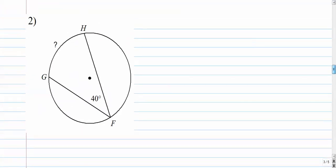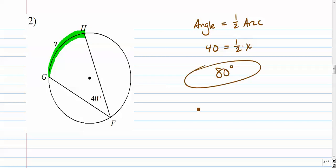Number two. Sometimes you'll be given the angle and asked to find the arc. So we're looking for this arc right here. Again, the inscribed angle is half as big as the arc. If the arc is missing, we'll call that x. The angle is 40. So to get rid of the one half, you multiply both by 2. And there we go. So the arc is 80 degrees. Remember, the arc is always bigger than the angle.